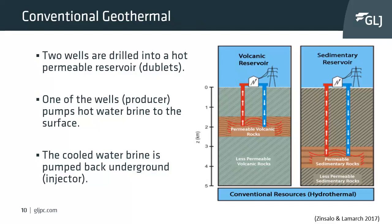With conventional geothermal, two wells — commonly known as doublets — are drilled into a hot permeable reservoir. One well, the producer, pumps hot water brine to the surface, which goes into a surface facility such as a power plant or thermal energy production unit. The cooled water is then pumped back into the ground as an injector.